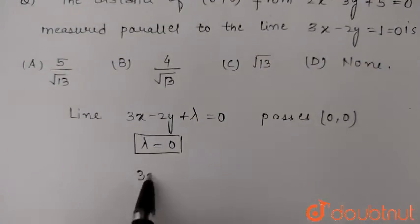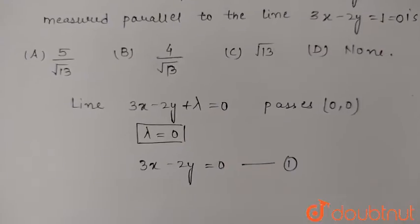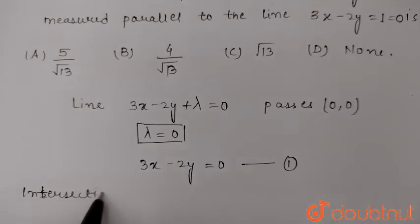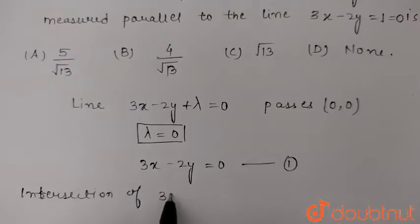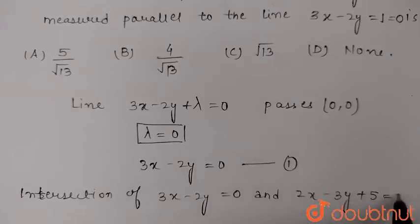So the line is 3x minus 2y equal to 0. This is our equation of the line. Now we can find the intersection of 3x minus 2y equal to 0 and 2x minus 3y plus 5 equal to 0.